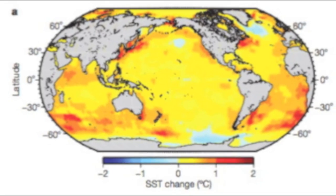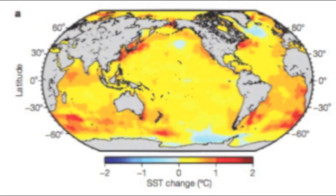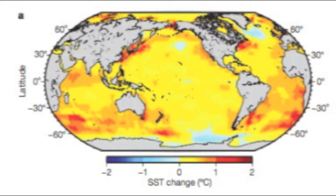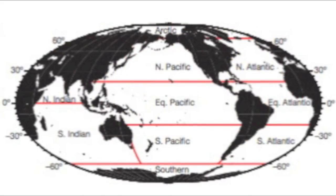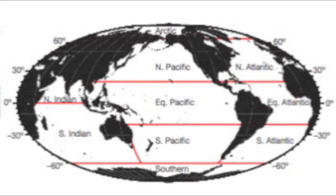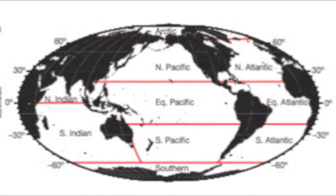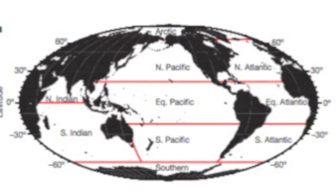Rising sea surface temperatures over most of the globe were heavily associated with declining chlorophyll levels in 8 out of the 10 ocean regions. The effects of sea surface temperature on chlorophyll are probably explained by its influence on water column stability and mixed layer depth.